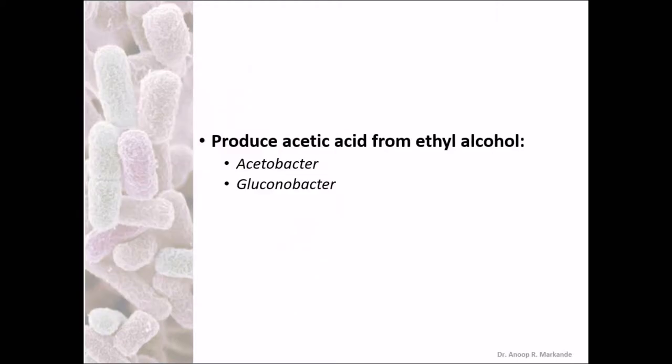Those organisms which produce acetic acid from ethyl alcohol — Acetobacter and Gluconobacter — these two organisms are industrially important for the production of acetic acid and vinegar.